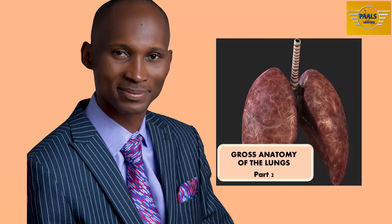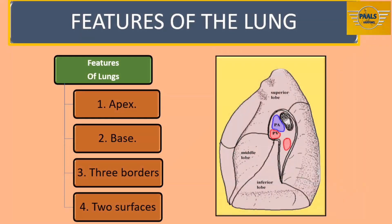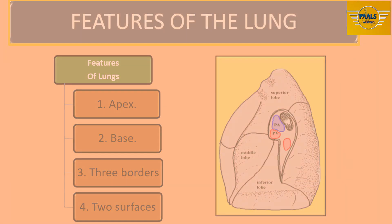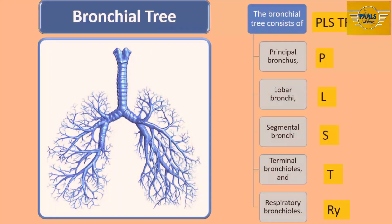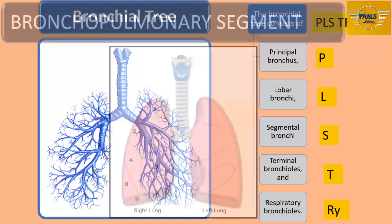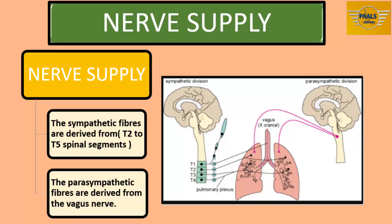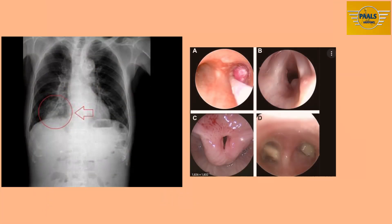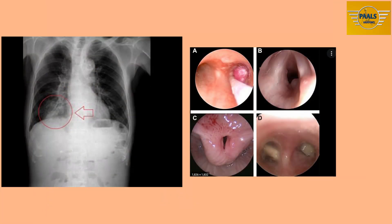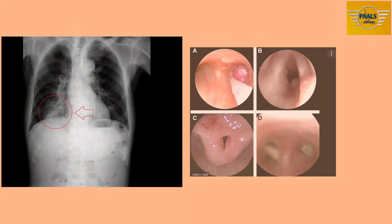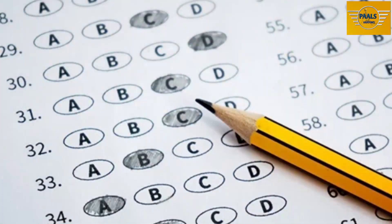This is part two of our lecture on the gross anatomy of the lungs. In part one, we focused on the basic anatomical features of the lungs. In this part two, we will discuss the bronchial tree, bronchopulmonary segments, and innervation and blood supply to the lungs. There is also a part three on applied anatomy and clinical correlates, including multiple choice questions from various exam boards.